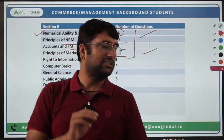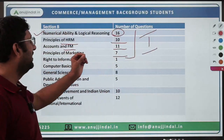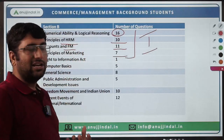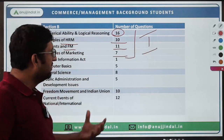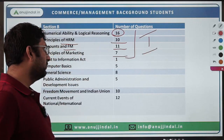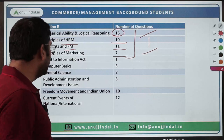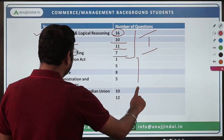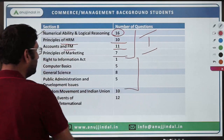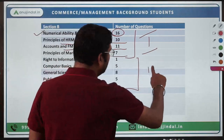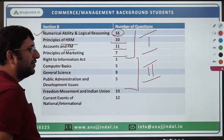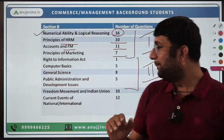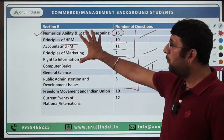Your foremost focus should be on numerical and logical ability reasoning, while simultaneously covering these areas which are your comfort zone — these are your strengths. Post that, you can create a second set comprising Right to Information Act, Computer Basics, General Science, Public Administration, and Freedom Movement and Indian Union. How you balance this is entirely up to you, but this could be a second set once you have covered your strength areas.